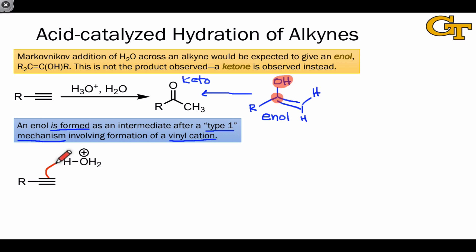The first elementary step is protonation of the pi bond. This results in a vinyl cation, an SP hybridized cation. Because the more substituted cation is more stable, this step occurs selectively to give the more substituted cation.